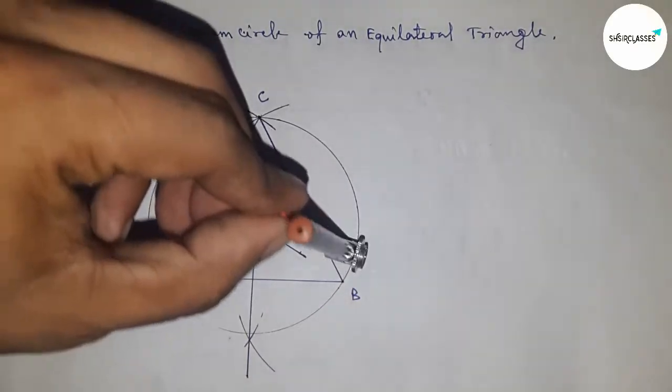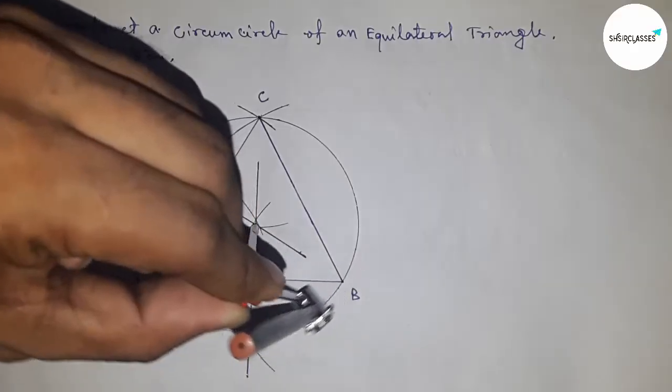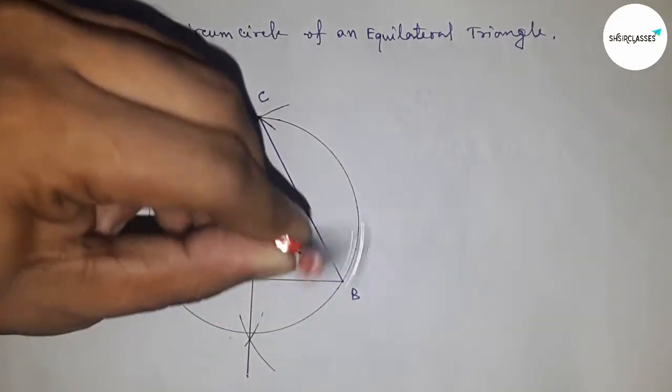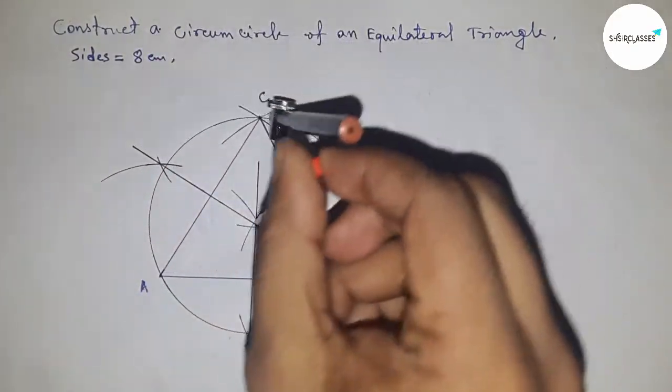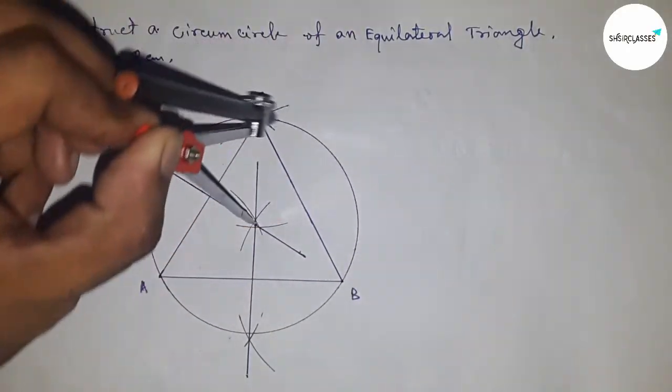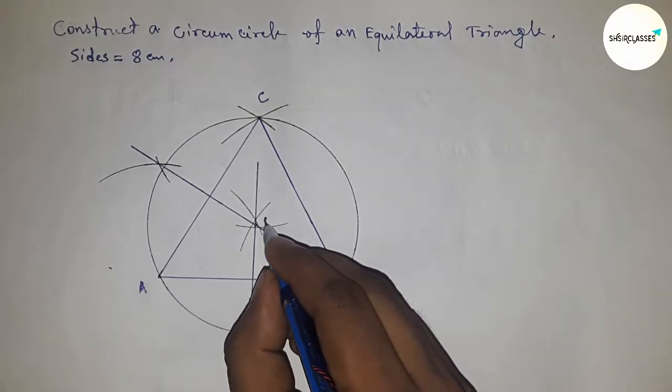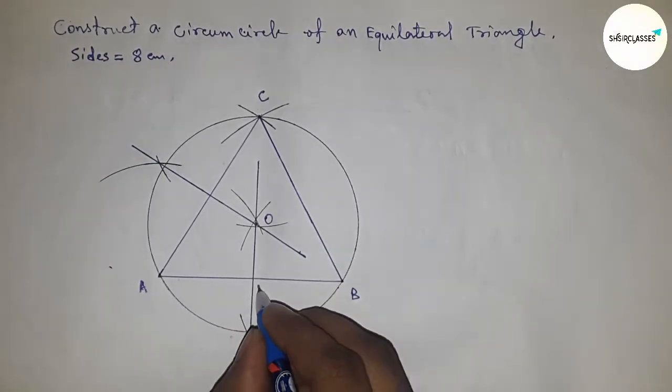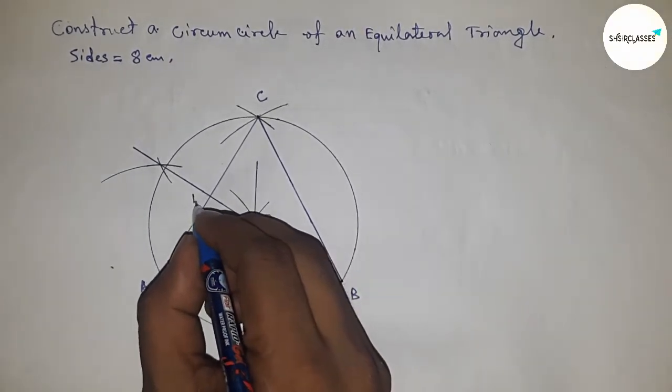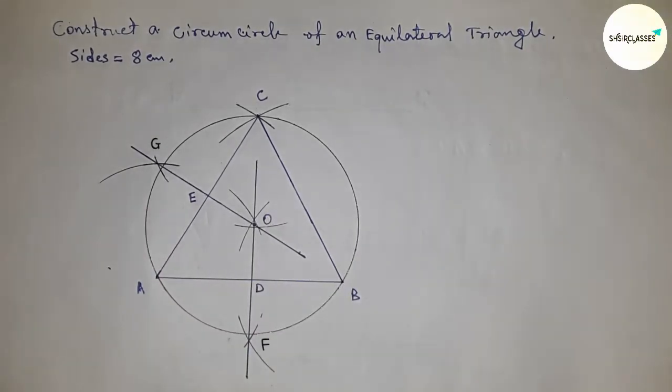through the vertices A, B, C of the triangle ABC. So this is perfectly a circumcircle of an equilateral triangle with each side 8 centimeters. This is the center O, and this is D, and this is E.